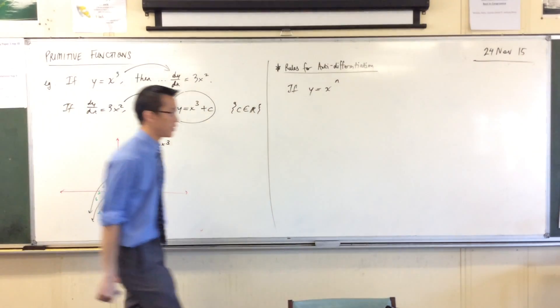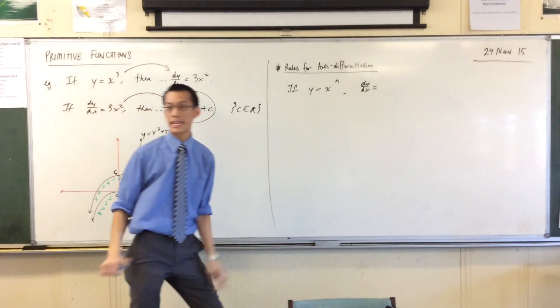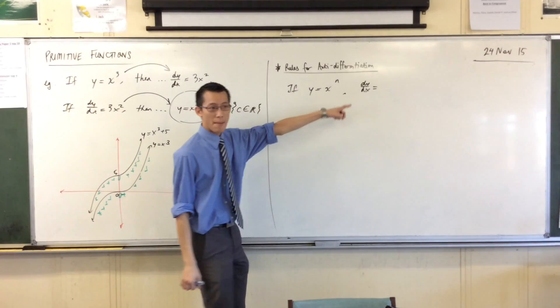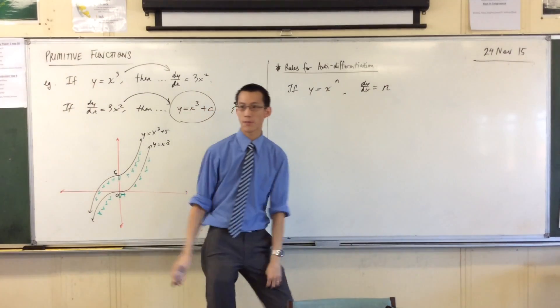We know what the derivative is. Just like we did over here for the particular example of n equals 3, we bring that power down out the front, so the power, which is n, comes out the front.